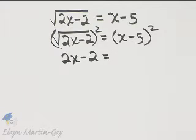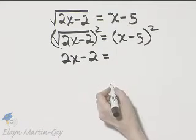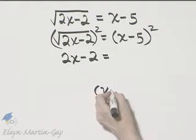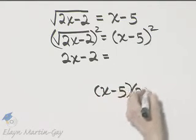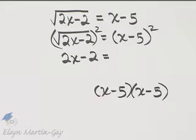The right side squared, if you need to, you may want to go off to the side so you can see what that is because you've got to make sure that you square that binomial correctly.